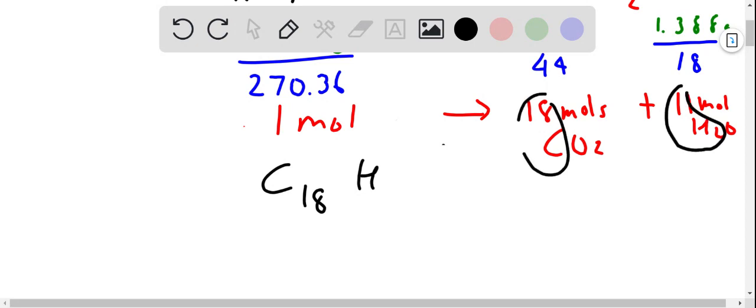And there is 11 times 2, 22 moles of H here. We don't know what O is, so we'll call it OZ. That is approximately the formula of the compound.